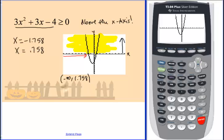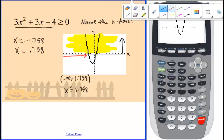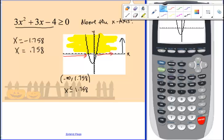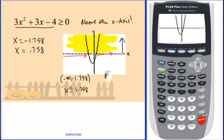Or we could write this as x is less than or equal to negative 1.758. And then where's the next place that it's going to be greater than zero? Well, look, it's from this point right here, that direction. Well, what point is that? That's the second intercept you found. Or 0.758 to infinity. And these should be brackets here.